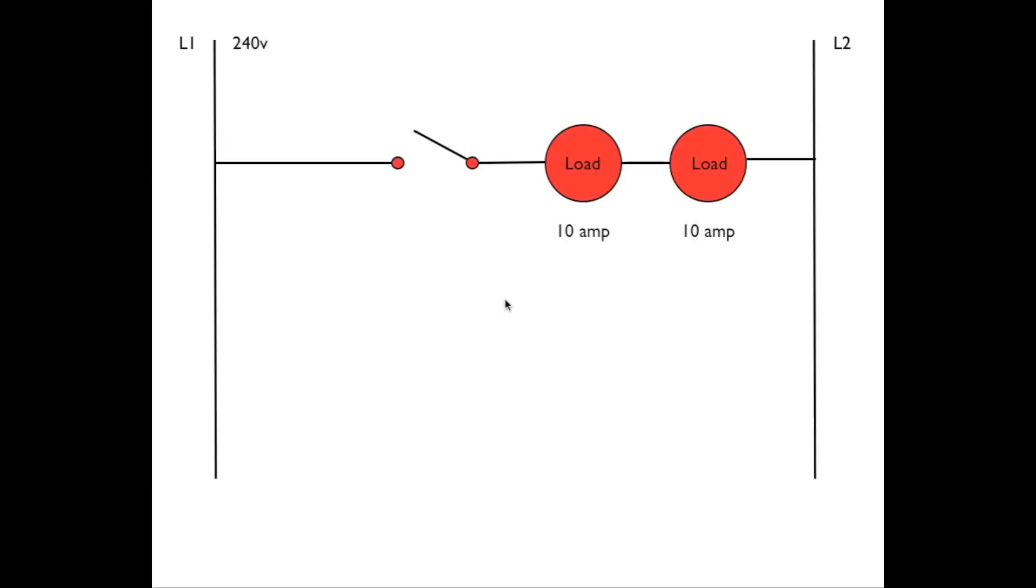I wanted to explain a little about these series loads and what the voltage drops are going to be and why. Here we have a circuit. We've got two identical loads, a manual switch, and 240 volts.